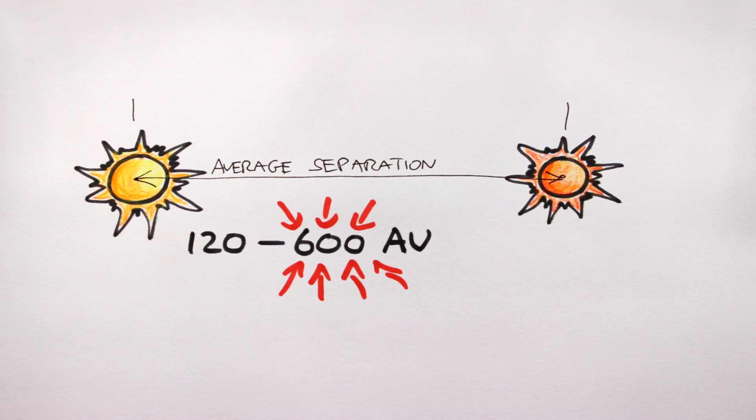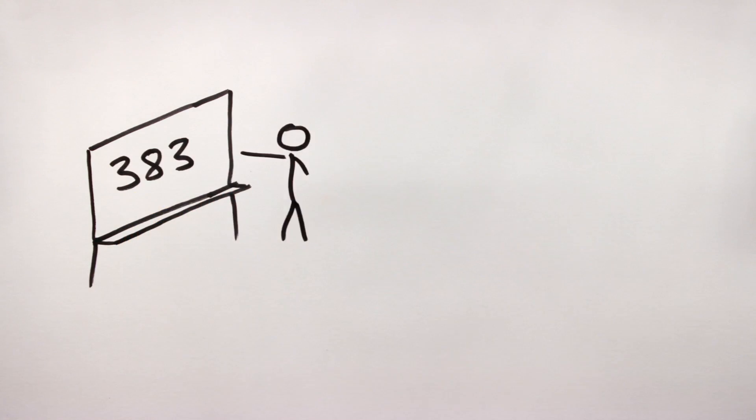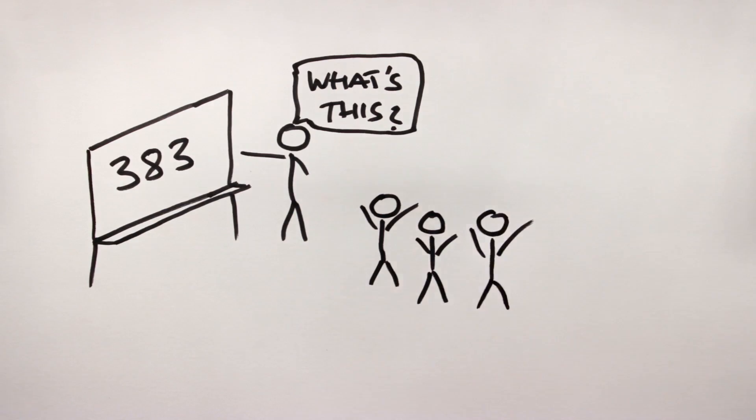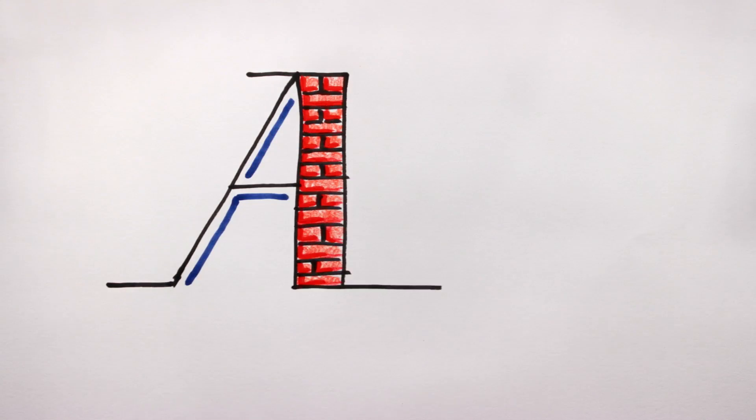I think I'll go with an average separation of 383 AU. Side note, some of you may notice that 383 is a particularly cool number, not least because mathematicians call it a sexy prime. And hey, if there's one thing I like to do here on Artifexian, it's that given the opportunity, I like to get sexy.